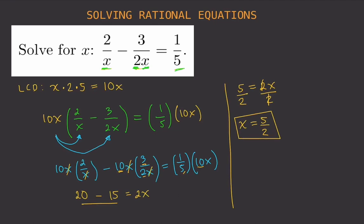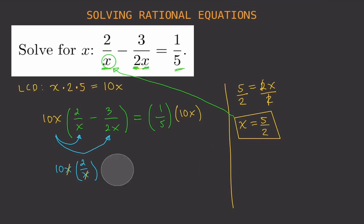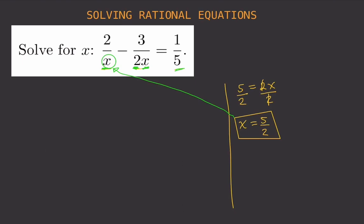This value will make the equation a true statement. To check, we substitute x equals 5/2 back into the original equation. So instead of x, we write 5/2. That gives us 2 divided by (5/2) minus 3 divided by (2 times 5/2) equals 1/5.